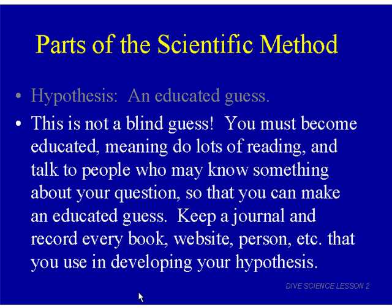For example, maybe your question was: what brand of dog food will make puppies grow the fastest? To figure that out, you wouldn't just buy one brand. You'd research several brands, see what manufacturers claim, talk to veterinarians, and search the internet for information on foods for puppies. You'd use all of this information together to help you make a good hypothesis — a good educated guess to the answer for your question — and record it all in your journal.